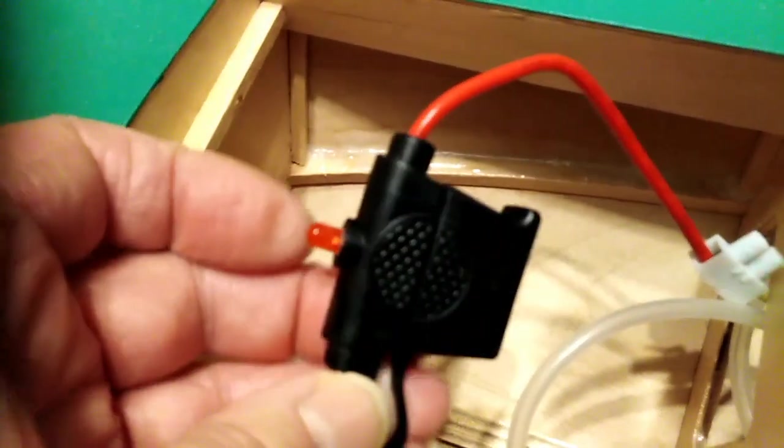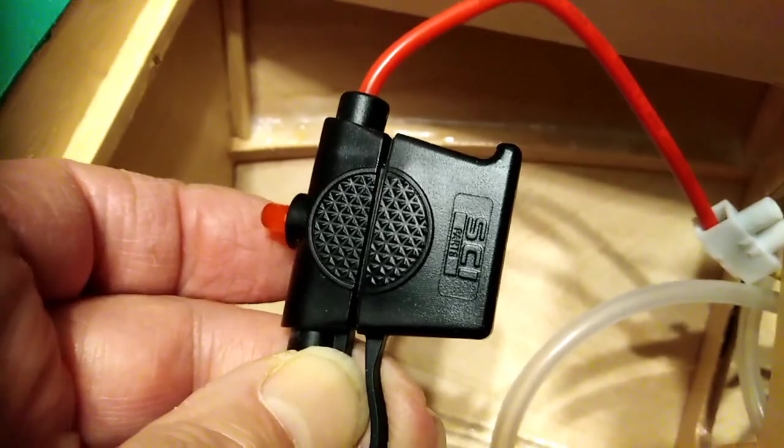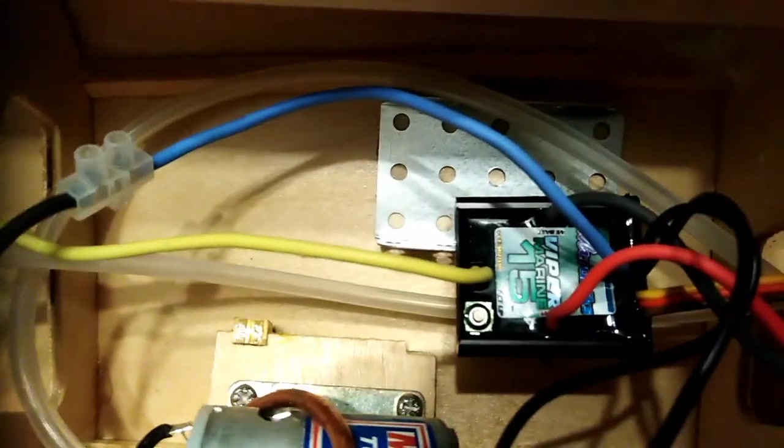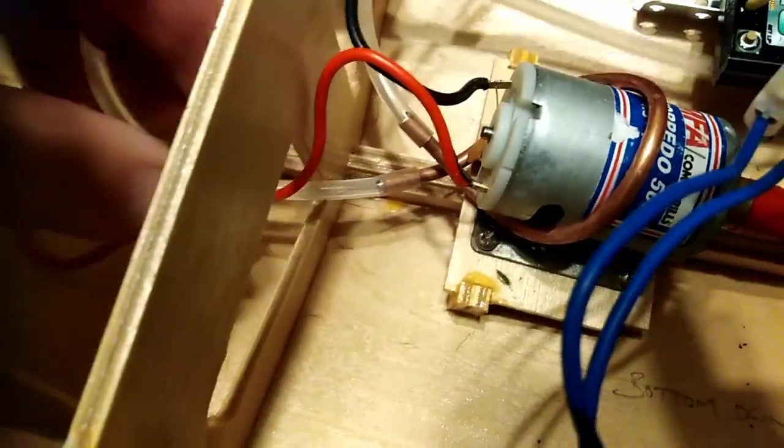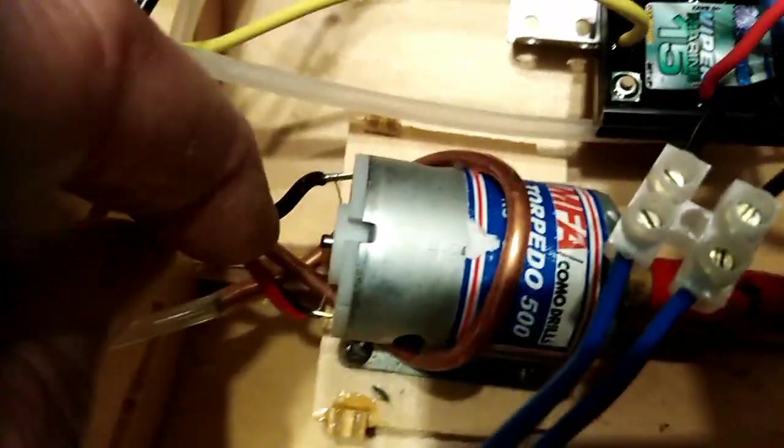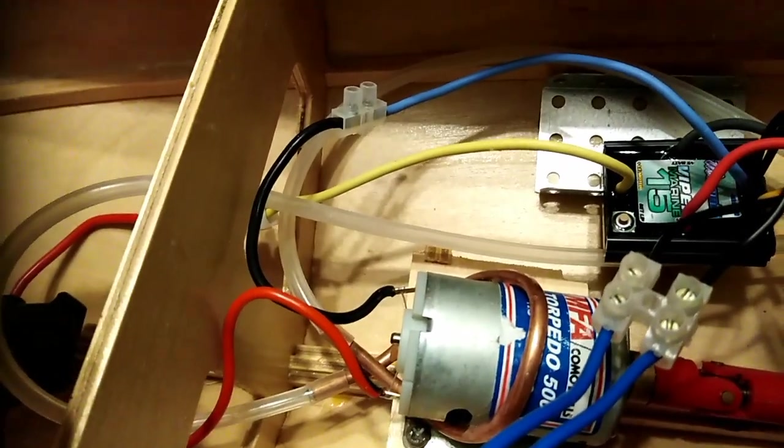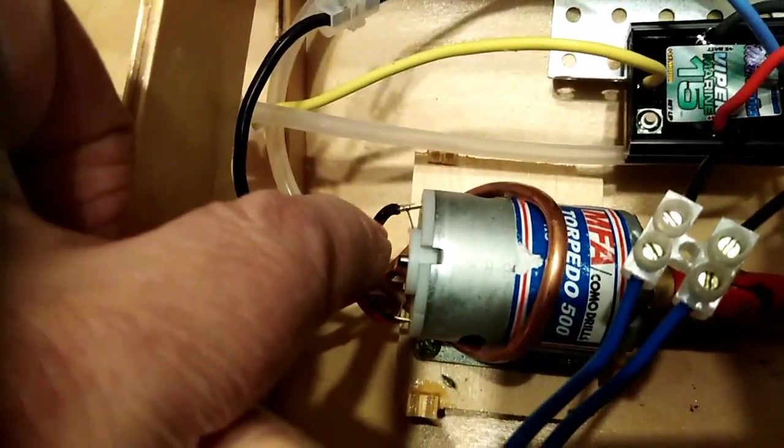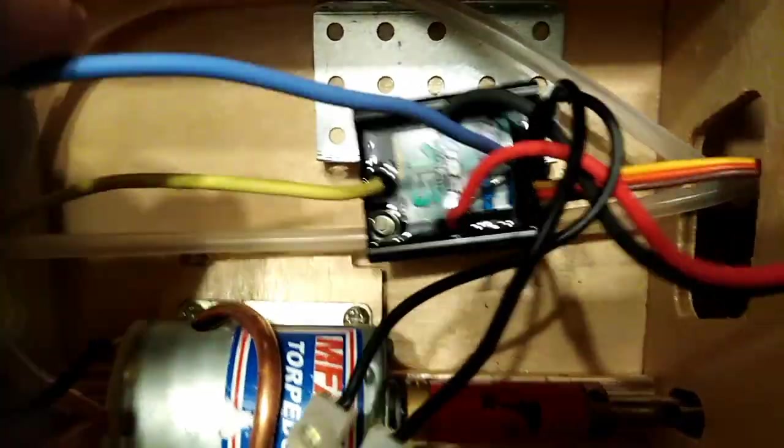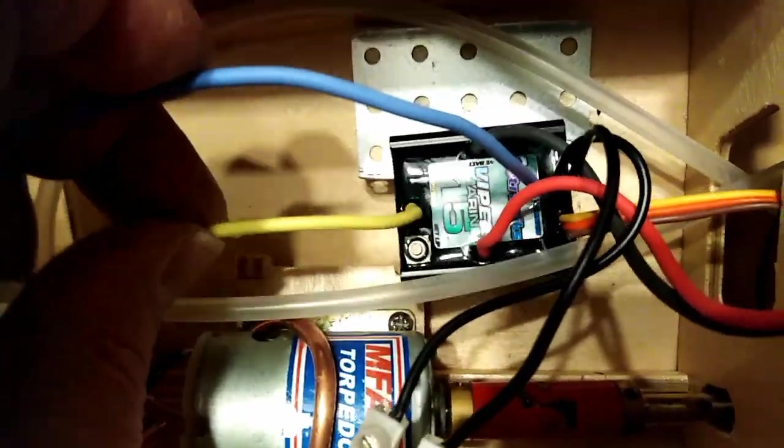The wire leads to a fuse, and that's a 10 amp fuse in there to protect the speed control and the motor. This wire then goes into one of the terminals on the motor, and we're using an MFA Torpedo 500 motor here, which is going to work very well on this particular model. The other terminal on the motor leads to the other terminal on the speed control, so we've got the blue and the yellow wire out of the speed controller leading to the fuse, and that leads to the motor.